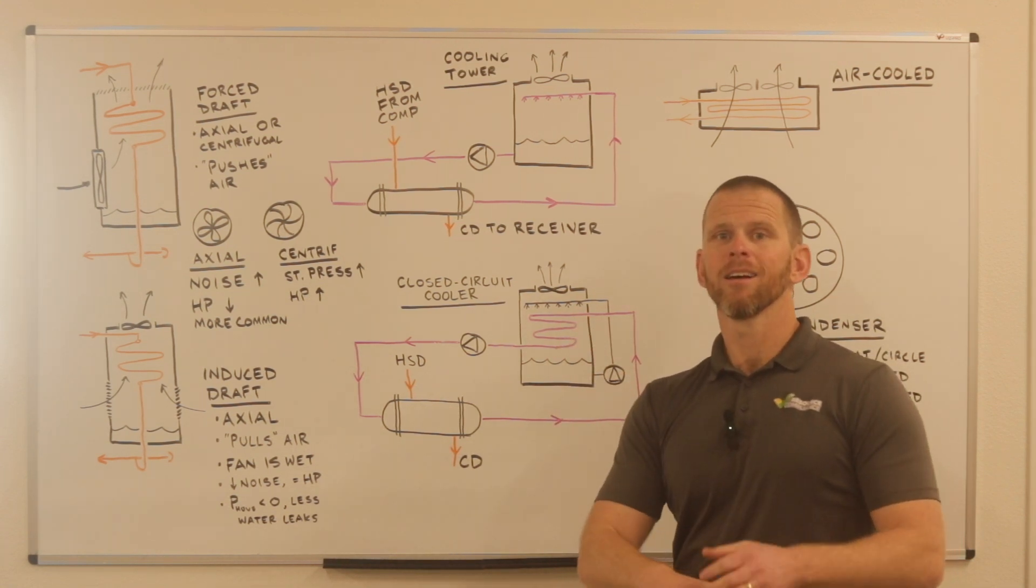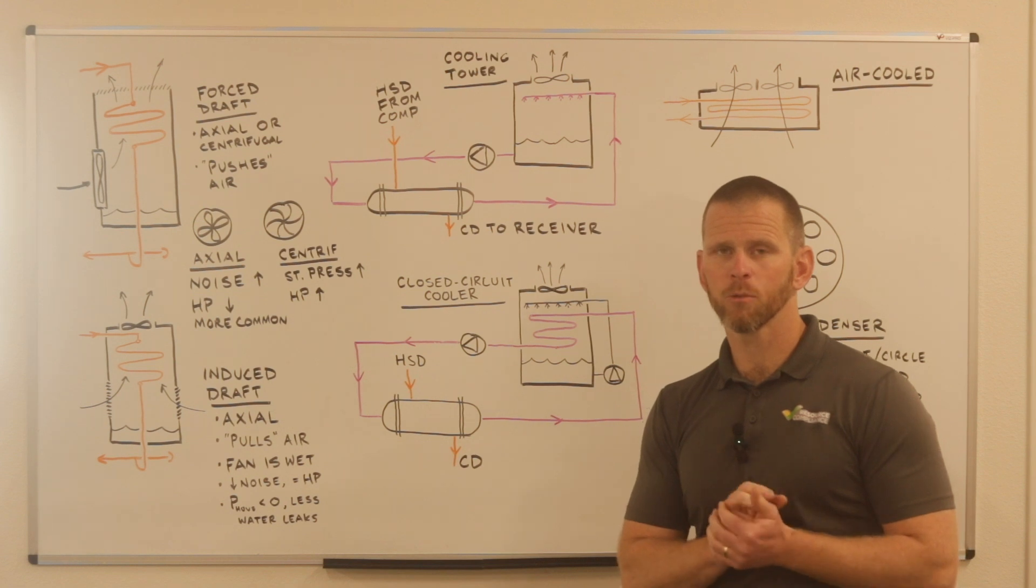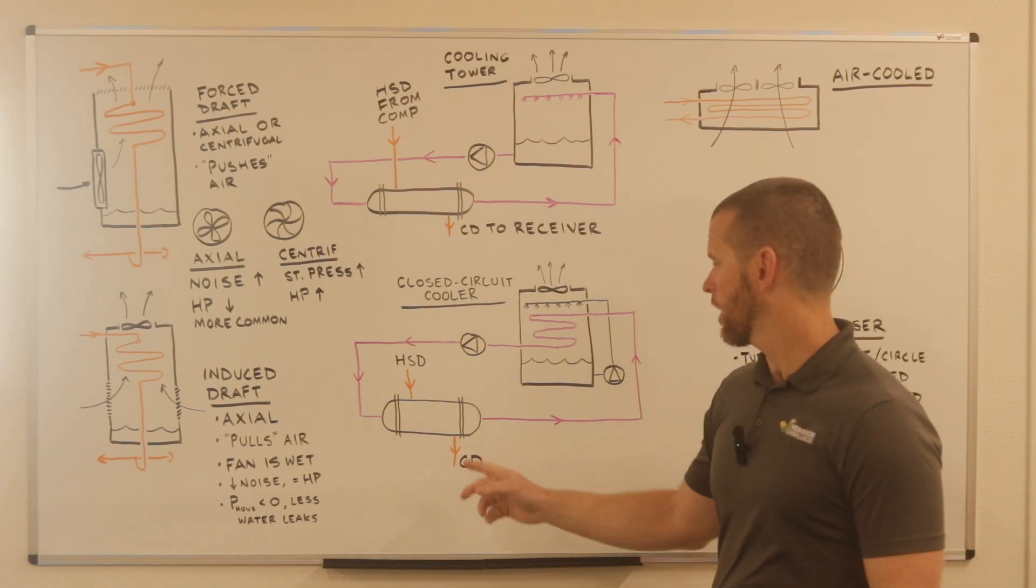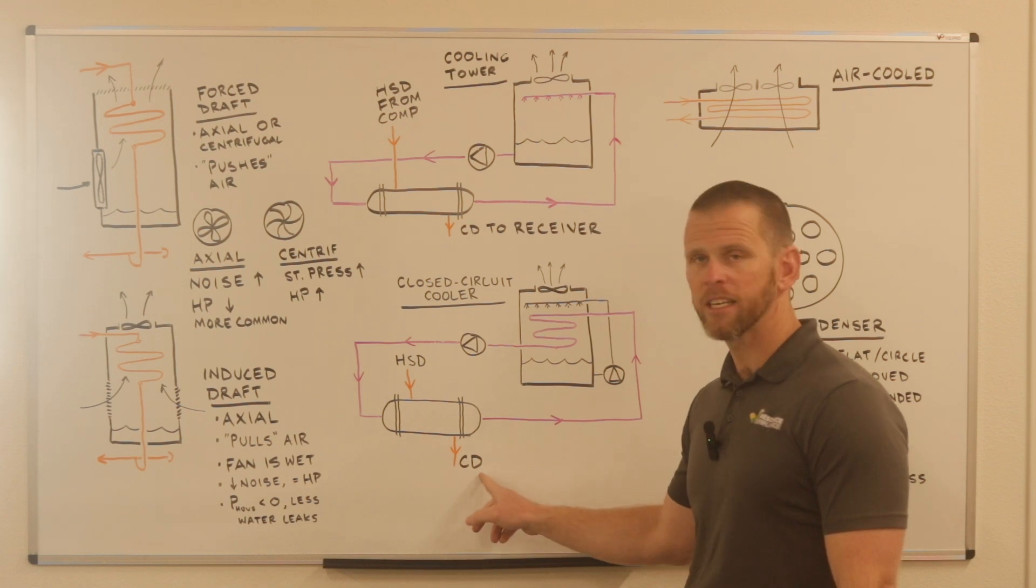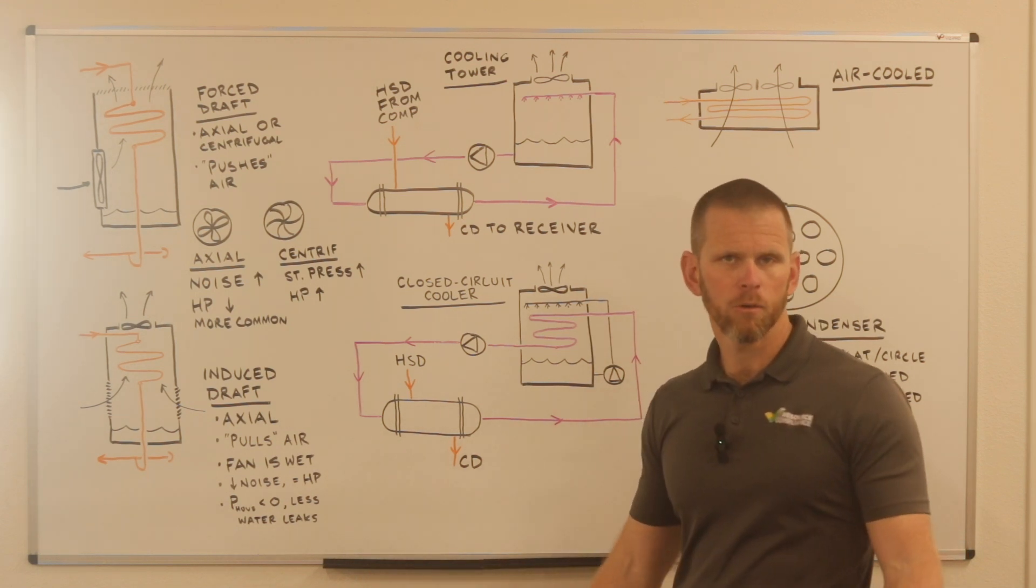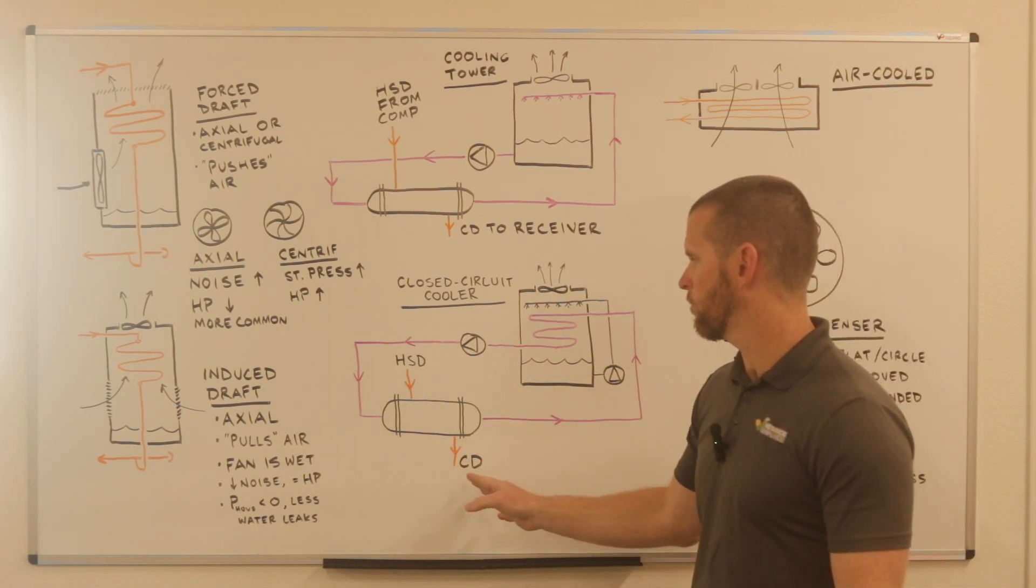Once it hits saturation, all the heat energy that gets rejected is in the form of latent heat, and it causes it to transition from a vapor back to a liquid where it can drain out as condenser drain, and then usually into a high-pressure receiver.